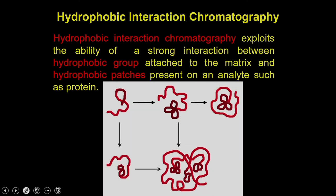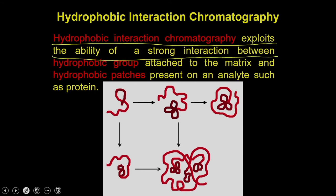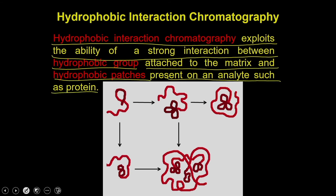What is the basic principle of hydrophobic chromatography? Hydrophobic interaction chromatography exploits the ability of a strong interaction between the hydrophobic groups attached to the matrix and the hydrophobic patches present on the analyte, such as the protein.